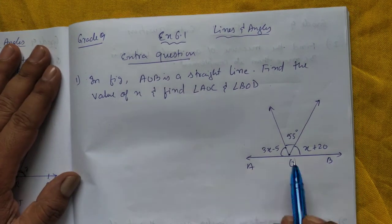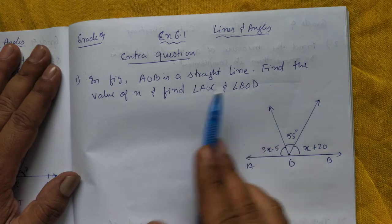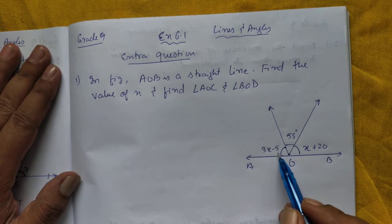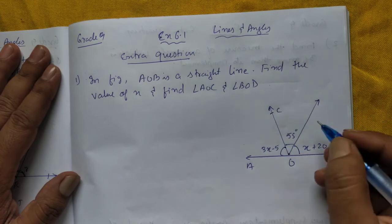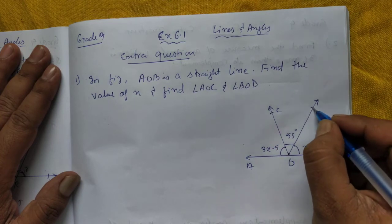First question: In a figure, AOB is a straight line. Find the value of X and also find this angle AOC, this is C, and BOD, this is D.